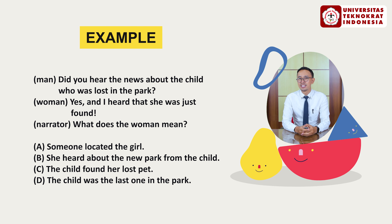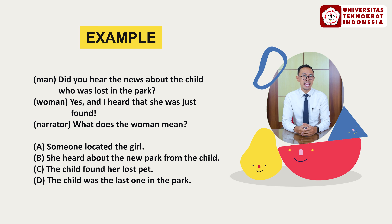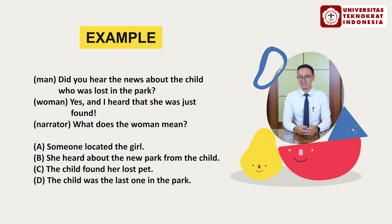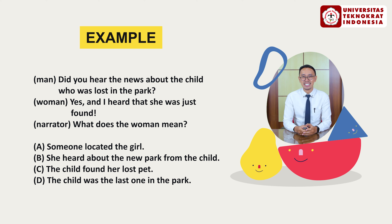The third example: in the recording, the man says 'Did you hear the news about the child who was lost in the park?' and the woman answered 'Yes, and I heard that she was just found.' The narrator asks: what does the woman mean? A — Someone located the girl; B — She heard about the new park from the child; C — The child found her lost pet; D — The child was the last one in the park.